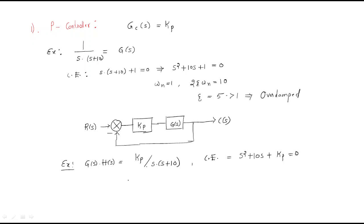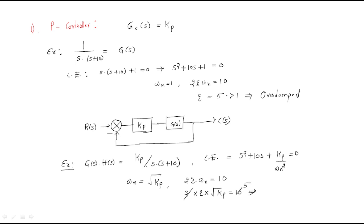From the new characteristic equation, ωn = √kp. With 2ζωn = 10, substituting ωn = √kp, we get ζ = 5/√kp. So by controlling the value of kp, we can control the value of ζ, and thereby modify the system response.